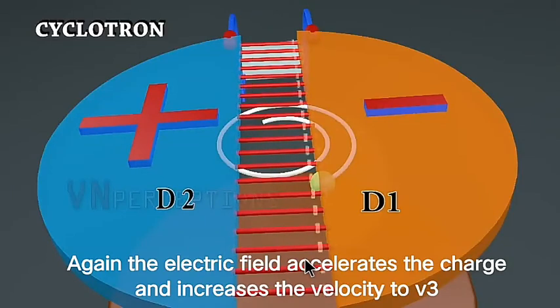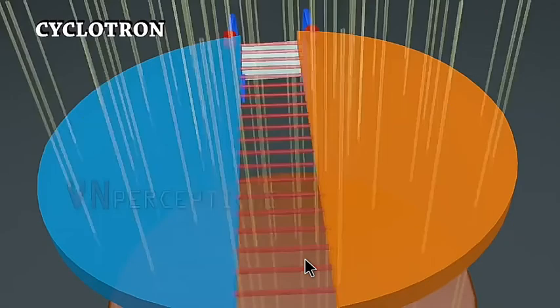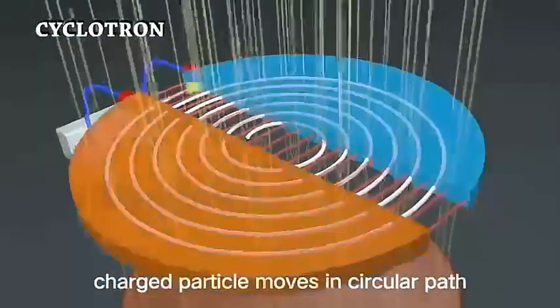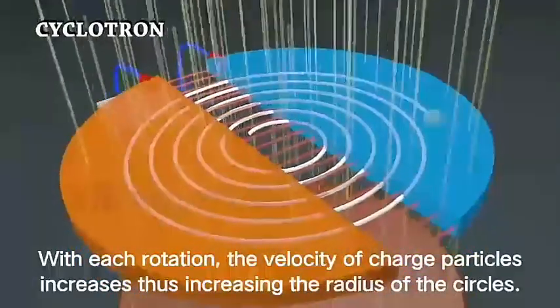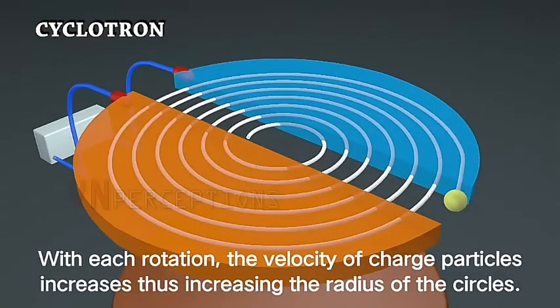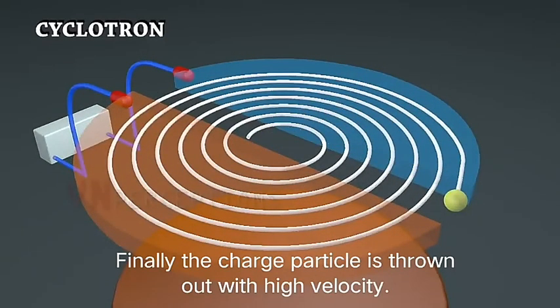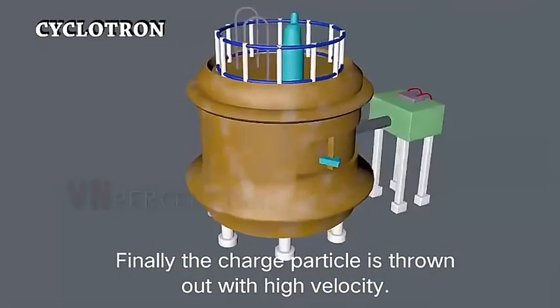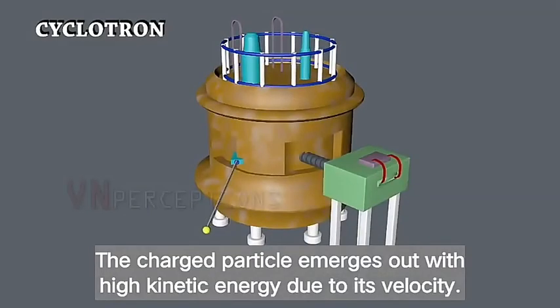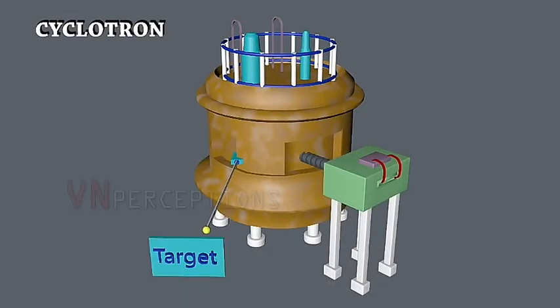This procedure continues — the particle keeps completing circular paths, and the radius of the circle goes on increasing. Finally, at one point, it exits the cyclotron. The point at which the charged particle exits is called the radius of exit, and the velocity with which it comes out is called the exit velocity. At the end the charged particle gets maximum kinetic energy and can be sent to hit a target to study its structure.